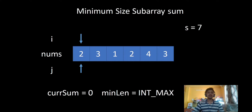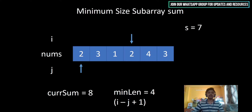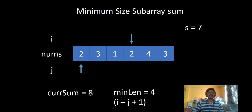Starting off, i and j are at the initial position. We include that element and our current_sum is 2, which is less than s, so we increment and include the next element. It becomes 5, then 6, and when we reach the next position it is 8 — this is the subarray which satisfies the condition. So we update the minimum_length, which is i minus j plus 1, since i points to the end of the window and j points to the start.